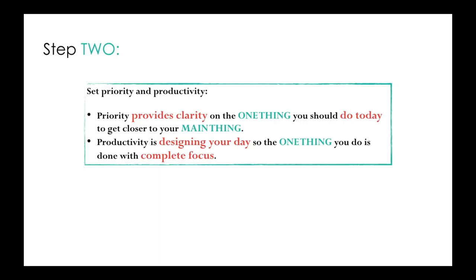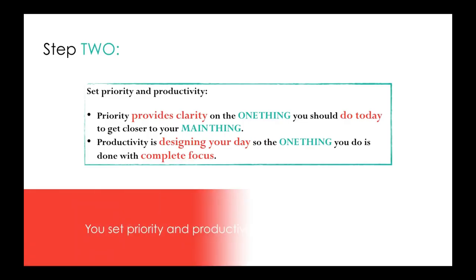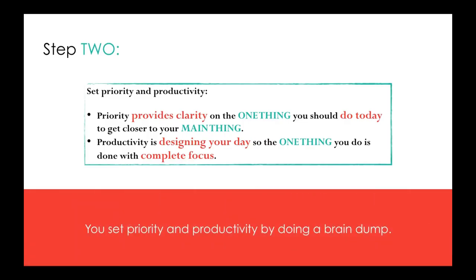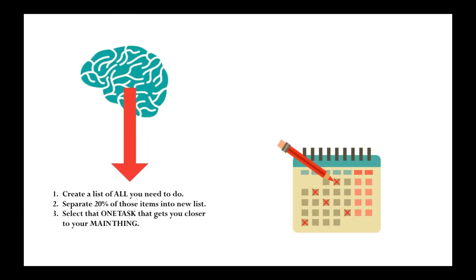So step number two is set priority and productivity. Priority provides clarity on the one thing you should do today to get closer to your main thing. In other words, step number one, that main thing, now you're going to find out the one thing that you need to do today to get closer to it. Productivity is designing your day so that the one thing you do is done with complete focus. Okay, so now we get back to the multitasking is a myth. So this step goes with that.